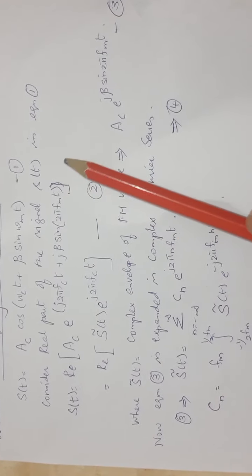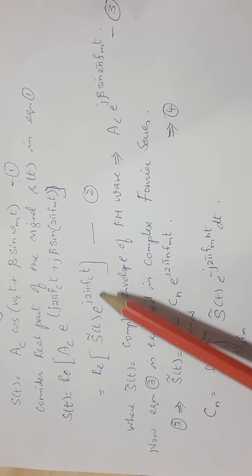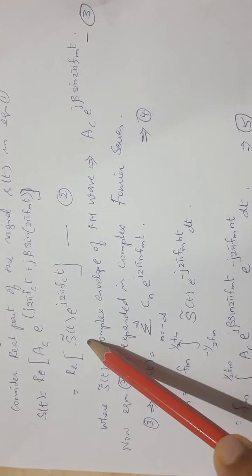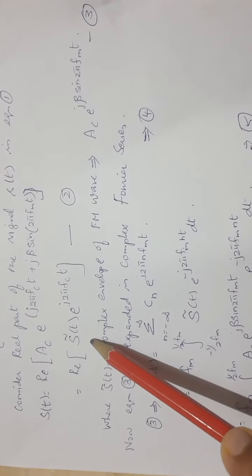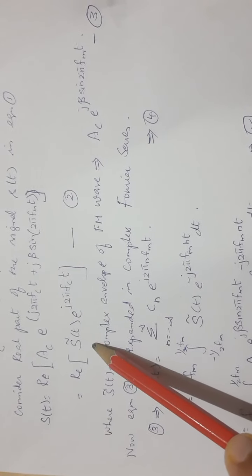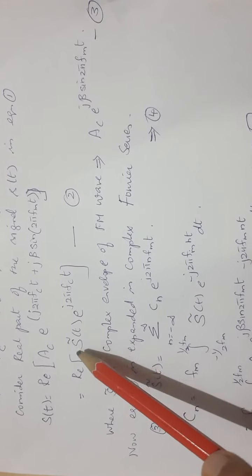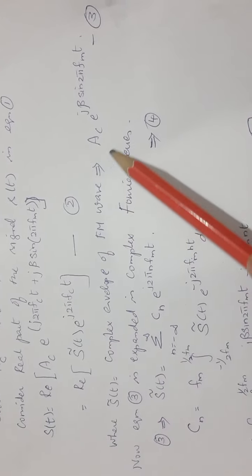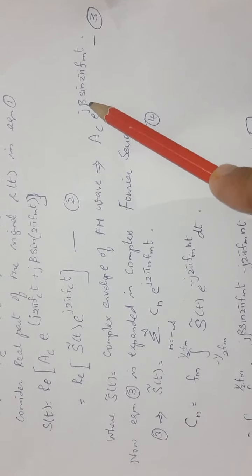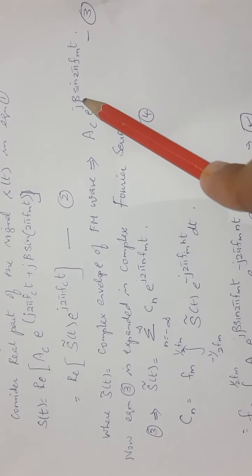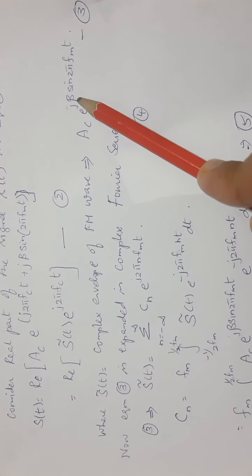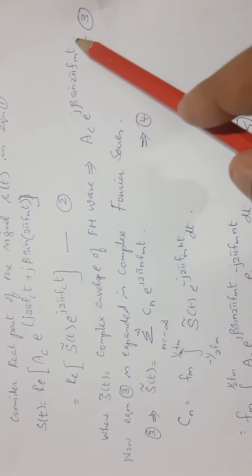This function is taken as the complex envelope, denoted s̃(t), which we have already seen developed in amplitude modulation. This complex envelope is rewritten as the amplitude Ac multiplied by e^(jβ·sin(2π·fm·t)), where β is the modulation index — the frequency deviation parameter used to calculate the modulation index of an FM signal.